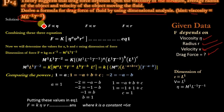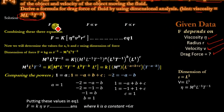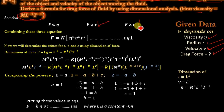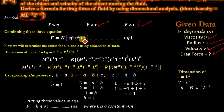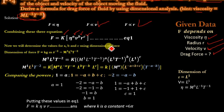From the given data, F is directly proportional to viscosity, F depends on velocity, and F depends on radius. Combining these three relations, we get F = K · η^A · V^B · R^C, where K is a constant, and we will determine the values of A, B, and C using dimensional analysis.